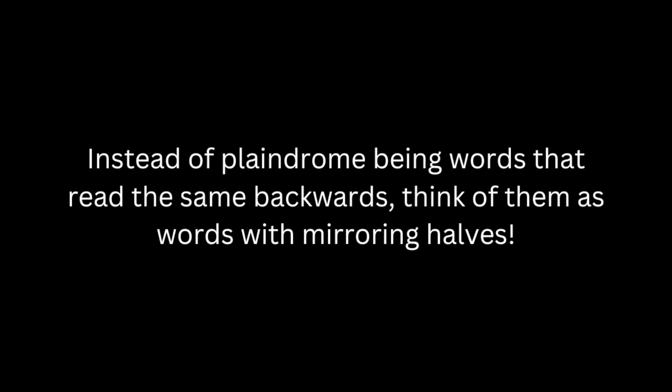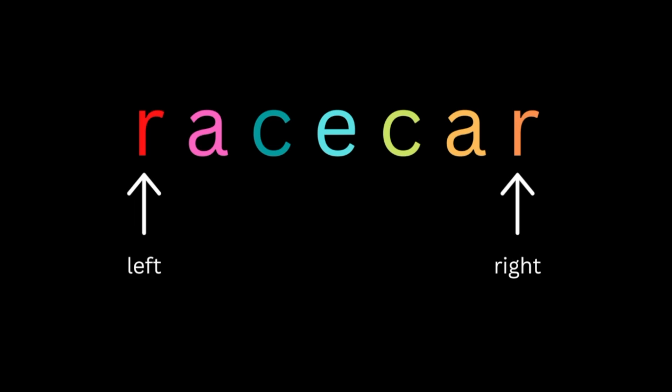Another way to solve this problem is: instead of thinking of palindromes as words that read the same backward, think of them as a word with mirroring halves. For example, 'mam' — we have 'm' and 'm' mirroring themselves.